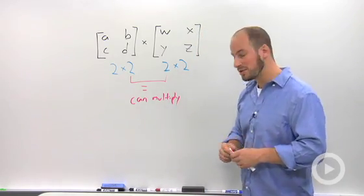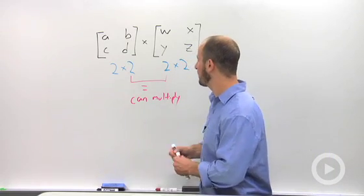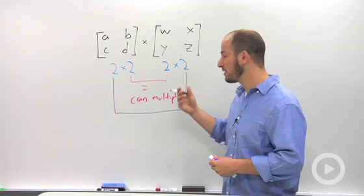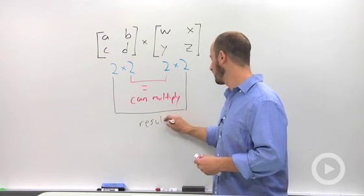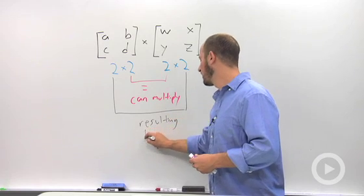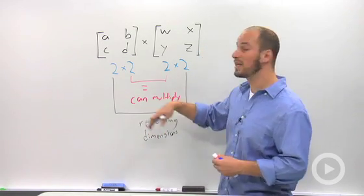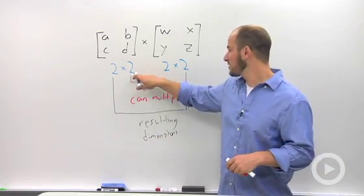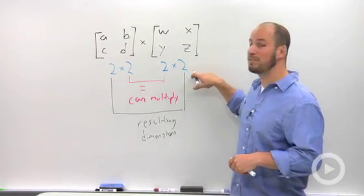And more so, your resulting matrix, the matrix you're going to be left with, is going to have dimensions of your outermost two. So this is going to be your resulting matrix dimensions. In this case, we have all twos so everything is equal. It tells us we're going to be able to multiply it and the resulting matrix is going to be a two by two matrix as well.